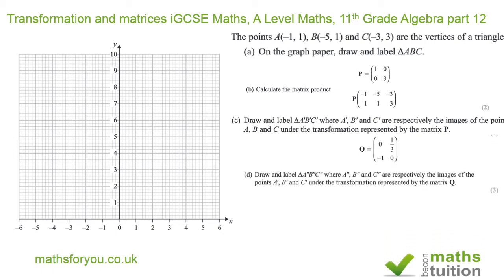Then we have transformation matrix Q = [0,-1; 1,0]. Part d says draw triangle A''B''C'' where A'', B'', C'' are respectively the images of the points A', B', C' under the transformation represented by the matrix Q.